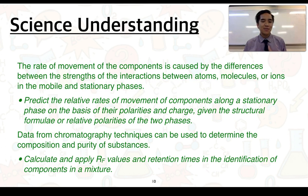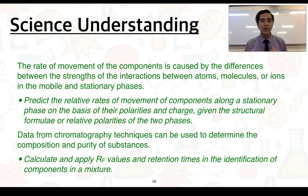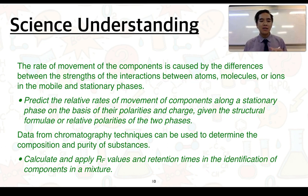For the next science understandings, the rate of movement of components is caused by the differences between the strengths of interactions between atoms, molecules, or ions in the mobile and stationary phases. You need to be able to predict the relative rates of movement of components along the stationary phase based on their polarities and charge, given the structural formulae or relative polarities of the two phases. Data from chromatography techniques can also be used to determine the composition and purity of substances — you need to calculate and apply RF values and retention times in the identification of components in a mixture.